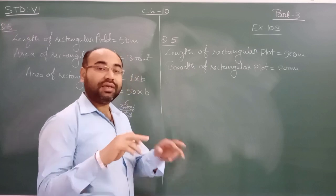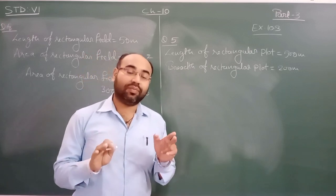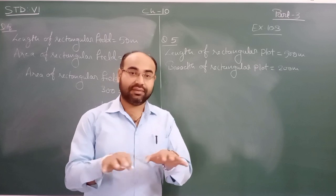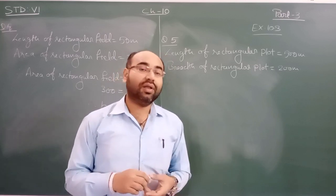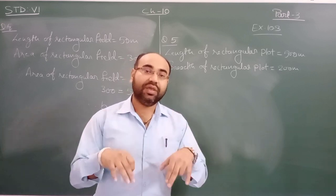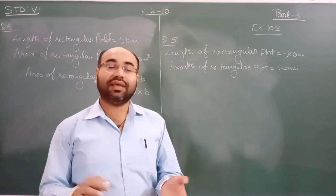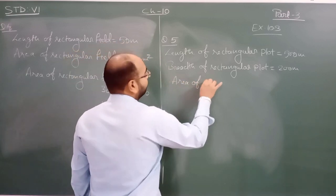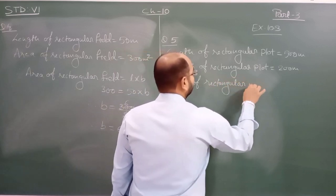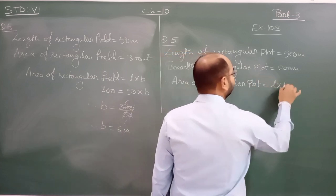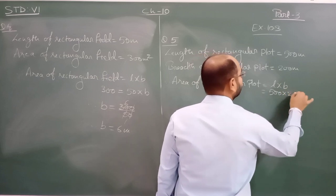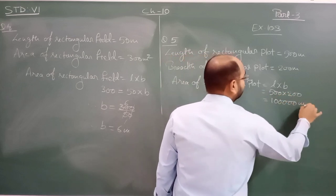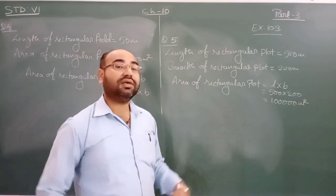Tiles are to be laid down on the rectangular plot. Since area is used to place tiles on a floor — the same concept applies here — we will first find the area of the plot. Area of the rectangular plot equals 500 into 200, which gives 1 lakh meter square.